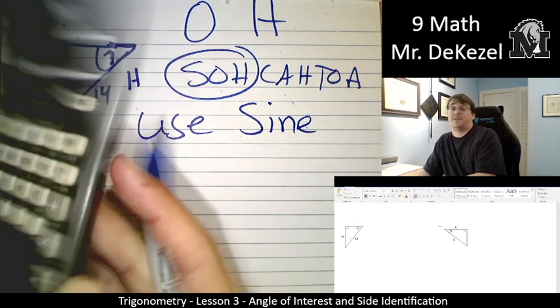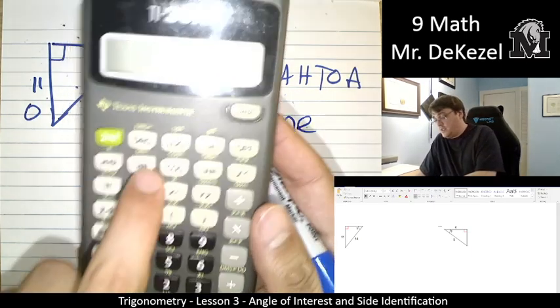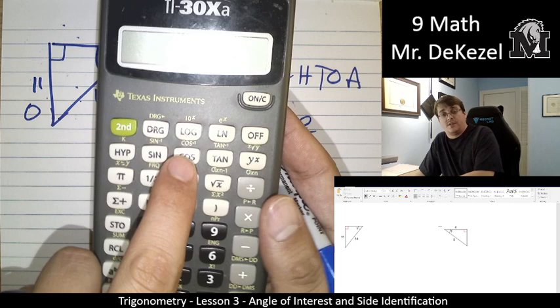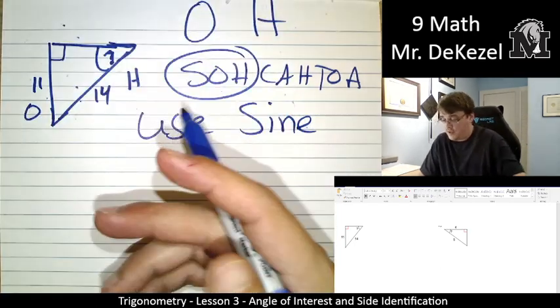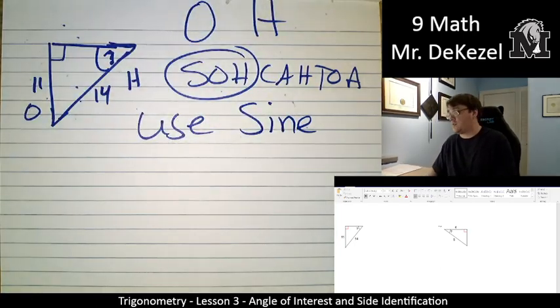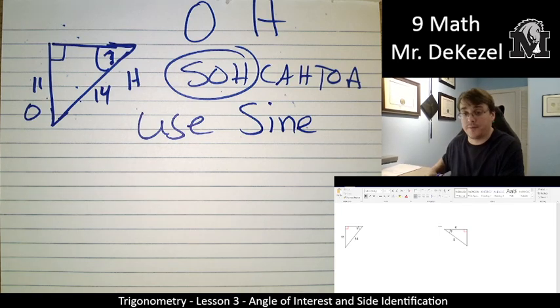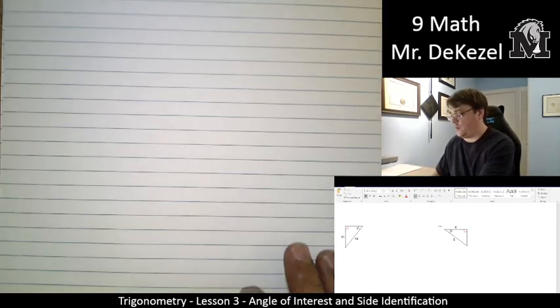These things are just buttons on your calculator. Sine, cos, tan. You've probably looked at them a hundred times, but we are going to use them soon. Let's do one more. One more together.